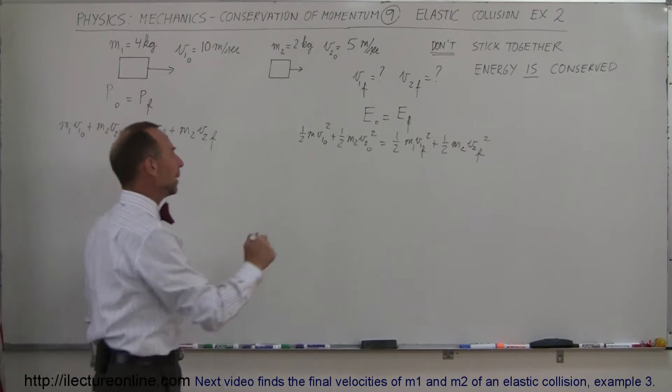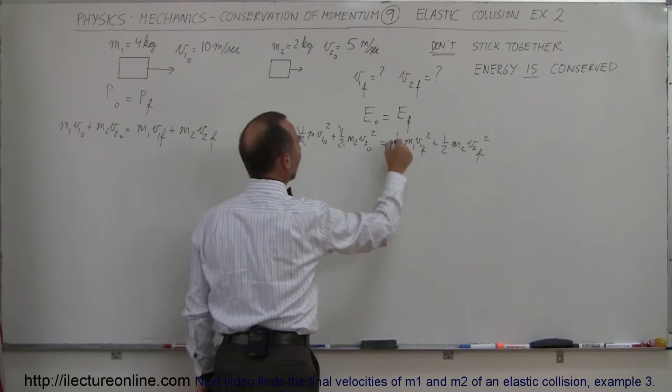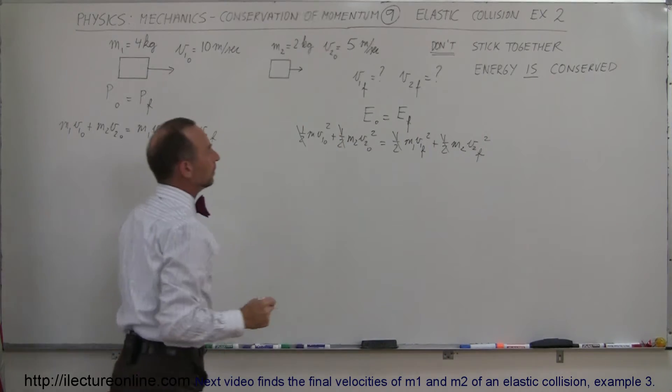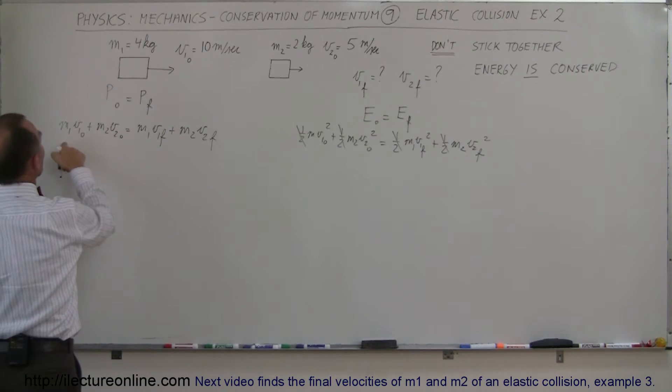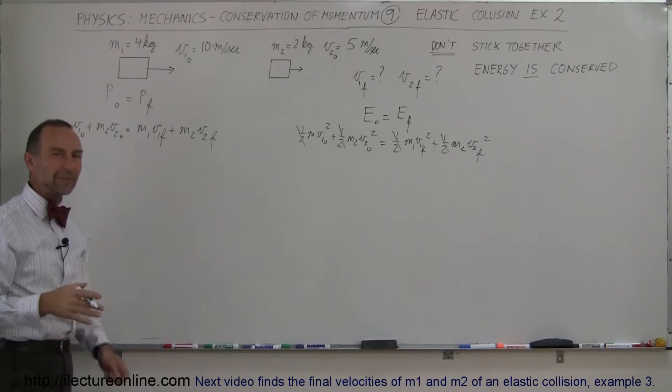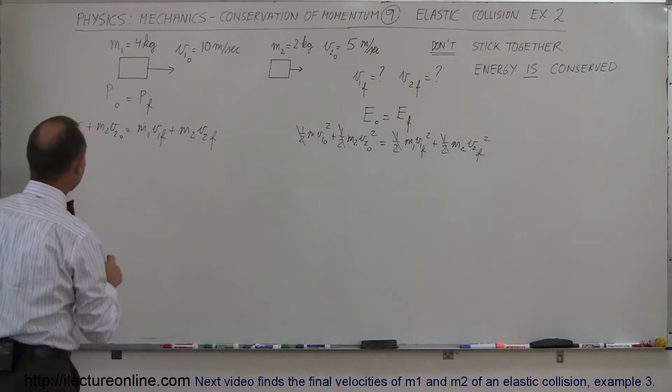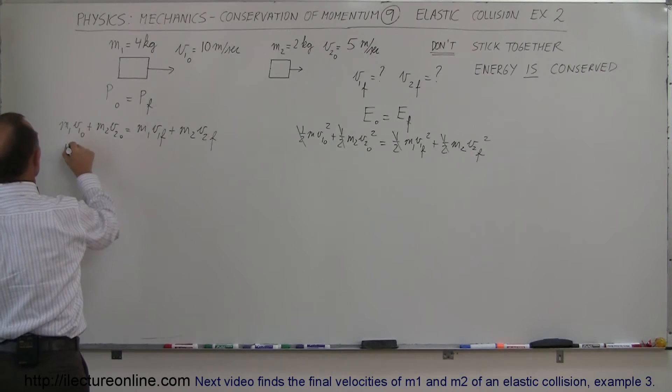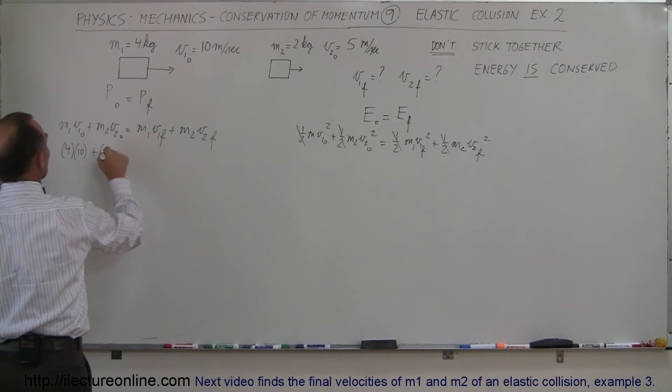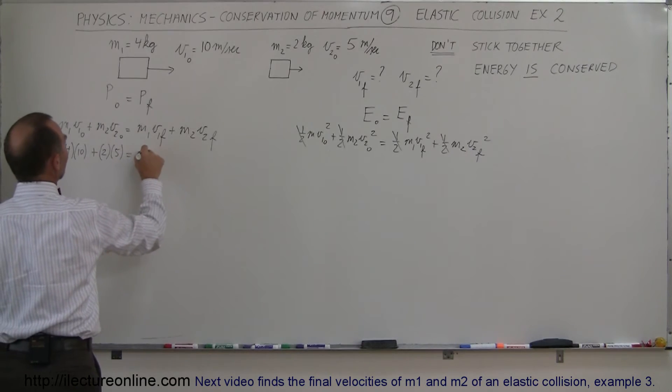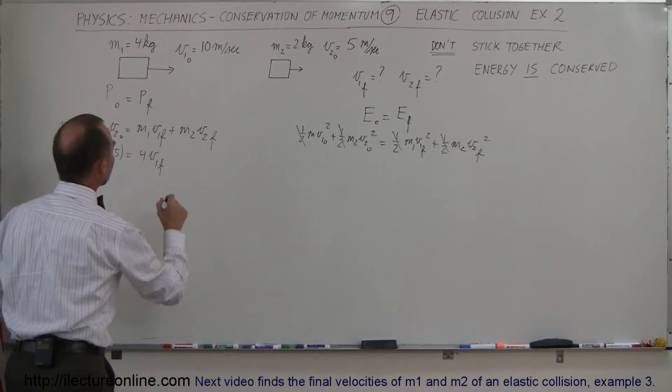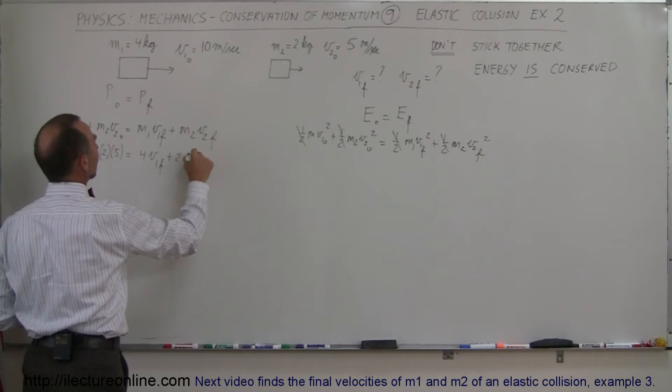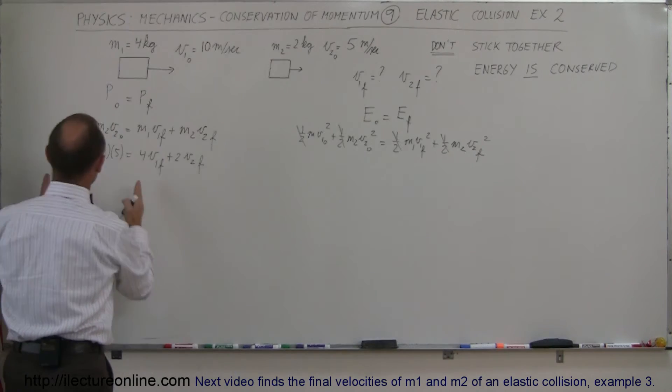So simplifying things a little bit, first we'll get rid of all the one halves, and then we can plug in what these are equal to, so we have some number on the left side of the equation. So I'm going to leave out the kilograms and meters per second because it's just a lot cleaner to work with. So we have 4 times 10 plus 2 times 5 equals, that would be 4 times V1 final, and that would be plus 2 V2 final.